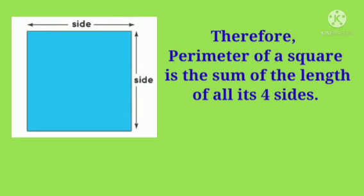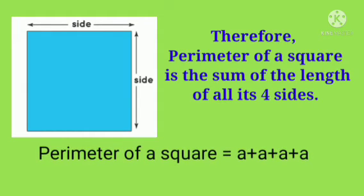Therefore, perimeter of a square is the sum of the length of all its four sides. Perimeter of a square is equal to a plus a plus a plus a, which is equal to 4 multiplied with a.